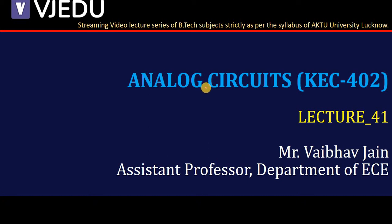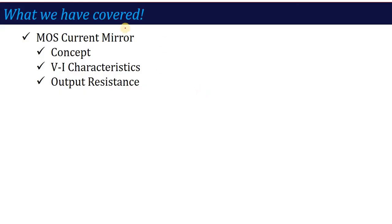Hello everyone, I welcome you all to the video lecture series of analog circuits. The subject code is KEC402 and here we are in lecture number 41. In the previous lecture, we started the MOS current mirror concept — what it is, what the VI characteristic is, and how the output resistance of a MOS current mirror is calculated.